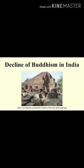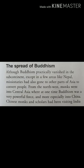In the previous lecture we studied how Buddhism divided and declined. Now read onward — the topic is the spread of Buddhism. Although Buddhism practically vanished in the subcontinent, except in a few areas like Nepal, missionaries had also gone to other parts of Asia to convert people. From the northwest, monks went into Central Asia, where at one time Buddhism was a very powerful force, and more especially into China.